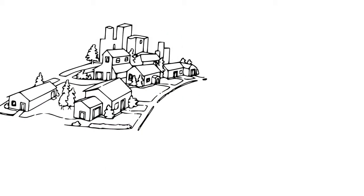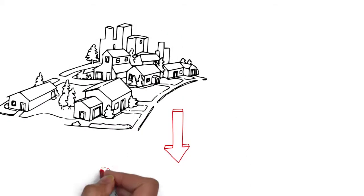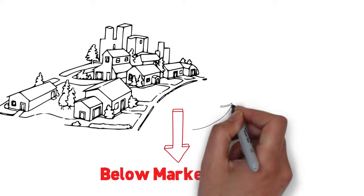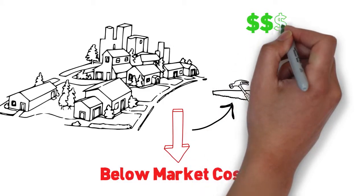You see, Charlie knows that there are tons of properties out there that can be snapped up far below market cost, fixed up, and then flipped for an incredible profit margin.